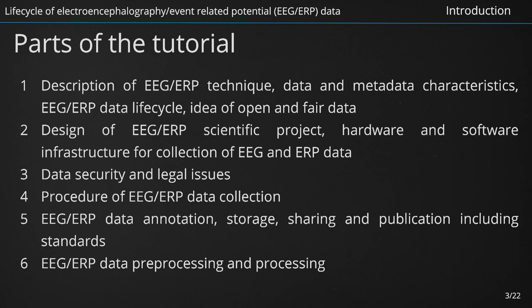The second part of the tutorial deals with the description and design of EEG and ERP scientific project and introduces a hardware and software infrastructure for collection of EEG and ERP data. The third part deals with data security and legislation related to data and metadata collection and their subsequent storage and use. The fourth part then deals with the procedure of data and metadata collection itself. In the fifth part, possibilities and approaches to EEG data and metadata annotation, storage, sharing and publication are presented, including existing standards, standardization initiatives and developed tools. Data and metadata preprocessing and processing, the used methods, workflows and tools are described in the sixth part.